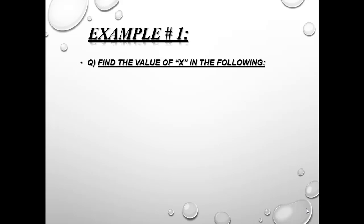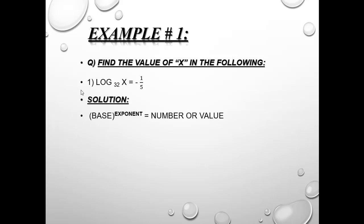In example number 1, find the value of x in the following: log to base 32 of x is equal to minus 1 over 5. As usual, there are three values and one will be missing — either the base, the number, or the power. Here we have to find x. If a log form is given, we convert it to exponential form, then collect values and substitute them.